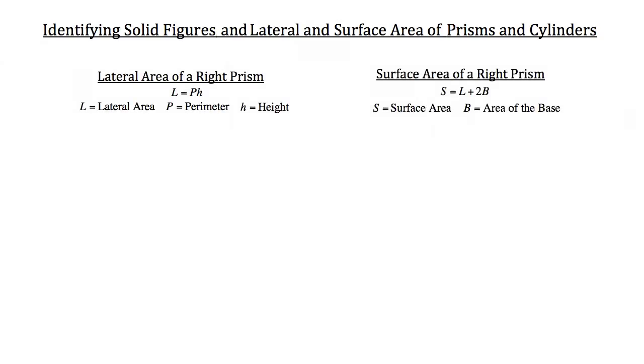The lateral area of a right prism is equal to perimeter times the height of that prism, and the surface area of a right prism is equal to the lateral area plus two times the area of the base.